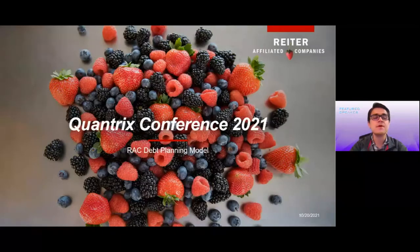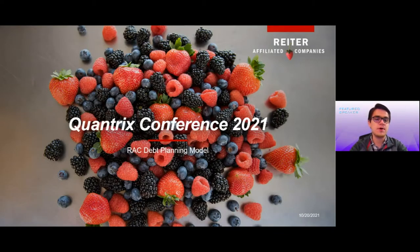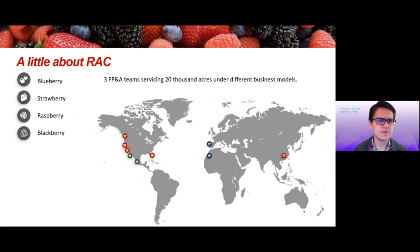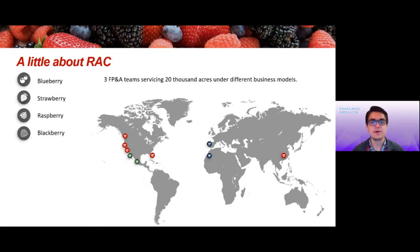Just first of all, a little introduction about myself at Rider. I am the global FP&A manager at Rider Affiliated Companies. Quick introduction about what Rider is — it's a berry producing company that produces four different kinds of berries: strawberries, raspberries, blackberries, and blueberries.